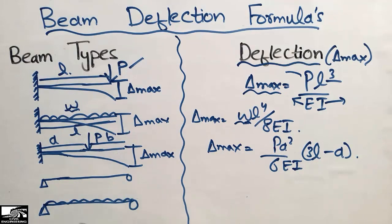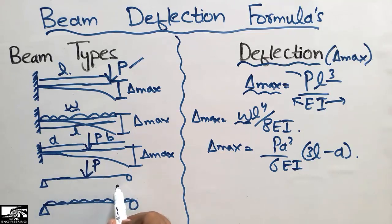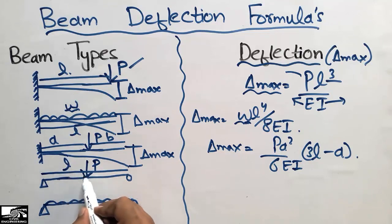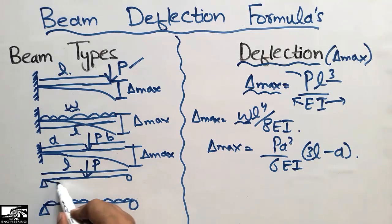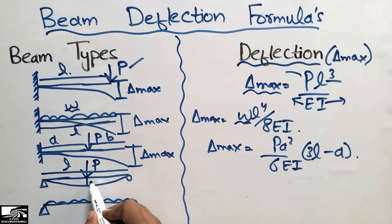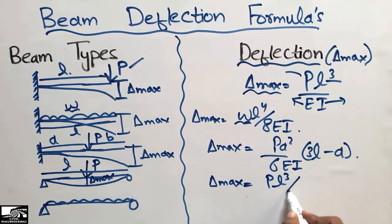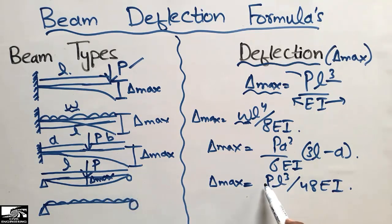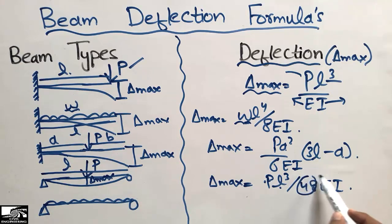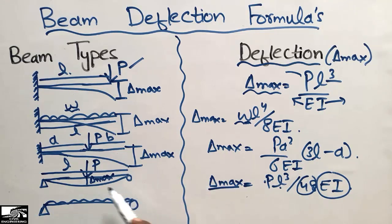The fourth type is a simply supported beam with a concentrated load P at the center. The beam has length L, so the load acts at L/2. The beam deflects with maximum delta at the midpoint. The maximum deflection can be found using the formula PL³ divided by 48EI, where P is the concentrated load, L is the length, 48 is a constant, E is the modulus of elasticity, and I is the moment of inertia.